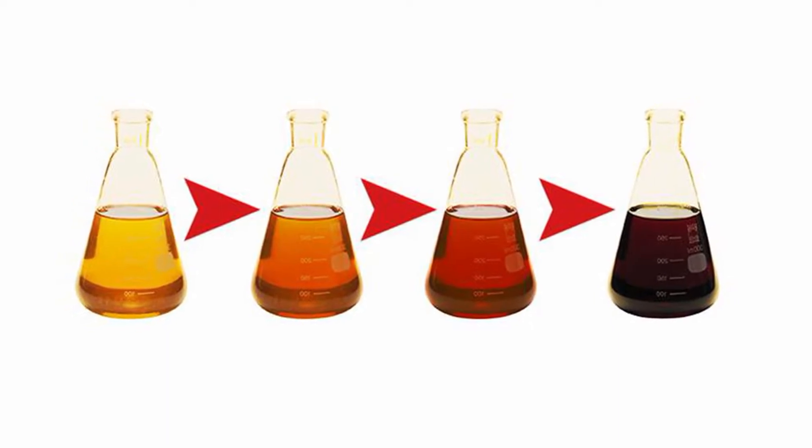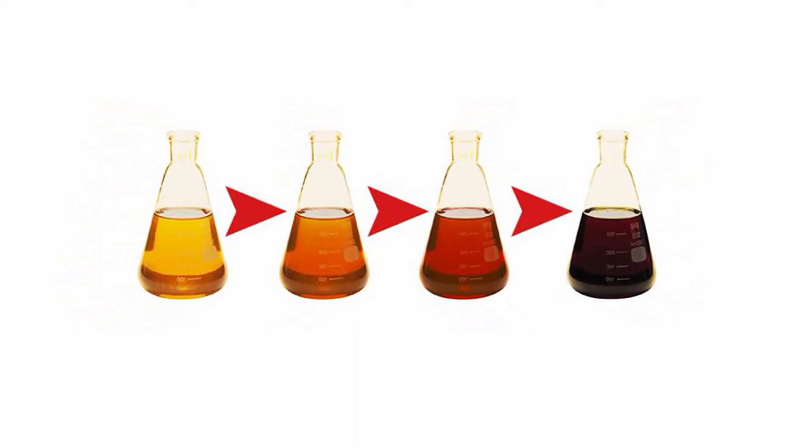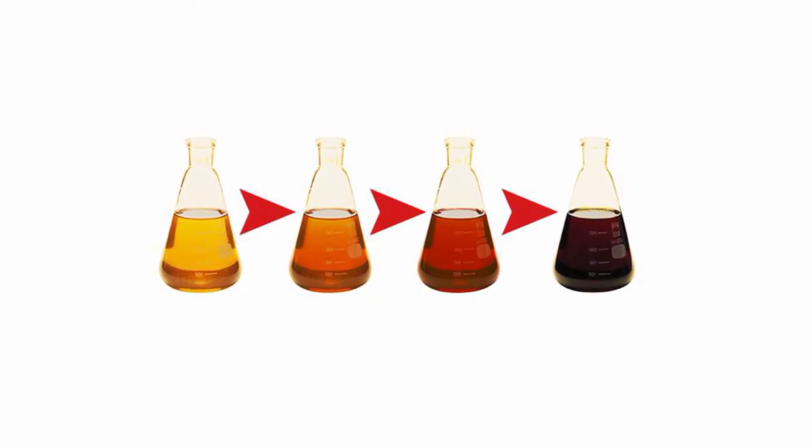As oil is used, its appearance changes. It gets darker. Tracking changes in the oil color can assist in providing an understanding of the oil condition. By measuring these color changes, we are able to gauge the varnish potential of the oil.